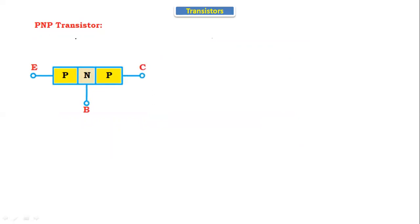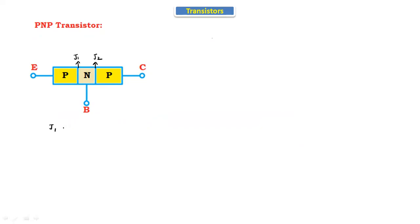The PNP transistor also has two junctions: J1 and J2. Junction J1 is a combination of the emitter and the base, and can also be called the emitter junction. Junction J2 is a combination of the collector and the base, and can also be called the collector junction.